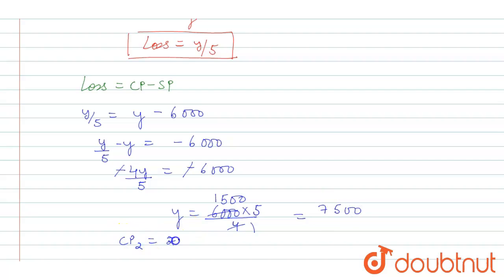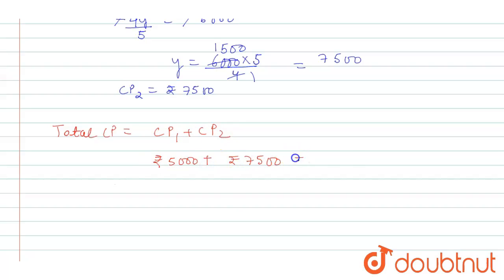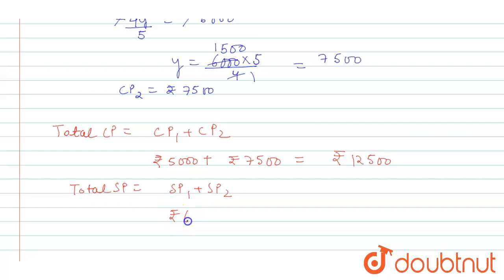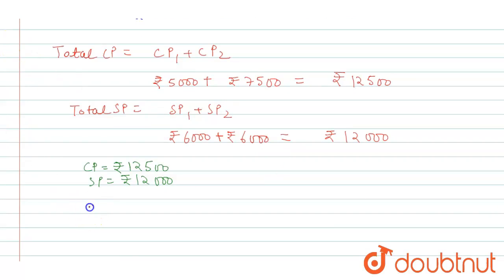Total CP equals CP1 plus CP2, which is five thousand plus seven thousand five hundred, equaling rupees twelve thousand five hundred. Total SP equals SP1 plus SP2, which is six thousand plus six thousand, equaling rupees twelve thousand. Since CP is greater than SP, there is a loss.